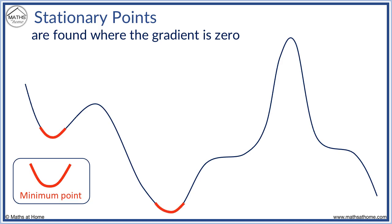Minimum points are just one type of stationary point. Where the graph looks like this, we have a maximum point. There are two maximum points on our graph.